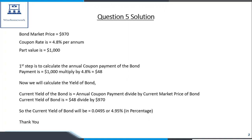Now we will calculate the yield of the bond. Current yield of the bond equals annual coupon payment divided by current market price of the bond. Current yield equals $48 divided by $970, which equals 0.0495 or 4.95%.